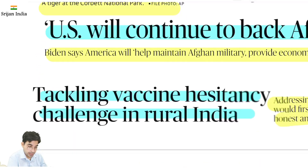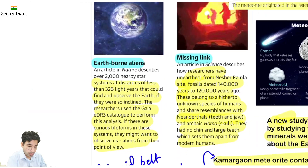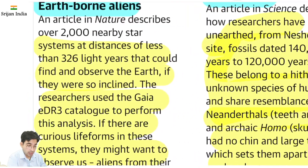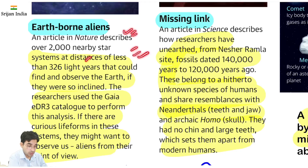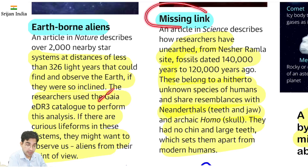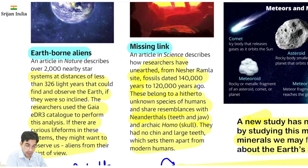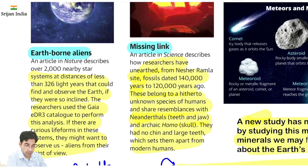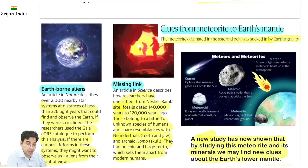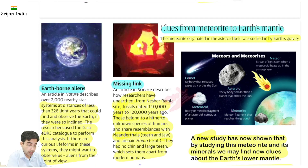Science & Technology snapshots: Earth-born aliens — ek Nature ki magazine hai, 326 light years door kisi star system mein possibility lag rahi hai aliens ki. Missing link — jaise hum pehle evolve hue hain, monkey se evolve hue, chimpanzee se. Ek aur doosra yahan mila hai jo human ka hi ek lineage tha, ancestors ka — neanderthal se resemblance hai. Skull mili hai jo thoda milta julta hai — isse pata chalta hai ki hamara evolution kaise hua.